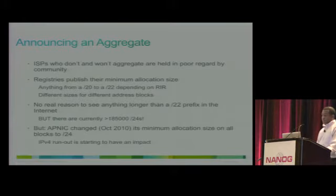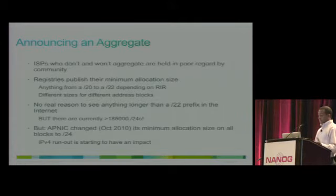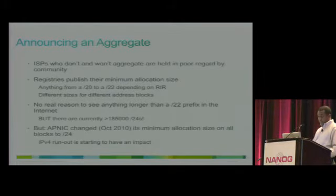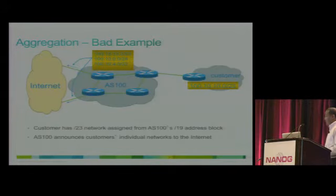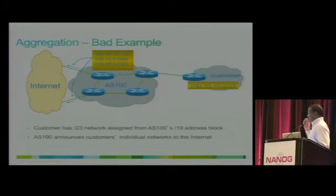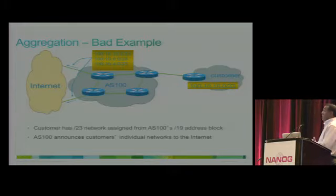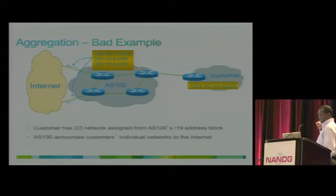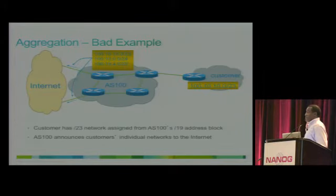Registries publish their minimum allocation size, ranging from /22 to /22, though in some cases there are /24s because we're running out of IPv4 address space. Here's a bad example: AS100 has assigned a /23 from its own /19 address space to a customer. If it advertises that /23 to the rest of the internet, that's a bad example and creates problems.